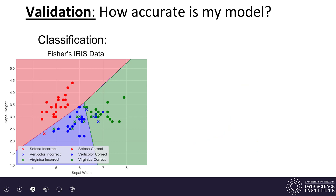For a classification model the formula is going to be a little different. On the left-hand side I have some classification data. This is a standard data set called Fisher's iris data. Ronald Fisher, in the early 1900s and 1930s, was a biologist who became the father of modern statistics. He measured a number of irises, recording four different parts of the flower. What we have here are two of those measurements — the sepal height and sepal width — in a scatter plot, measured for three different species: virginica, versicolor, and setosa.